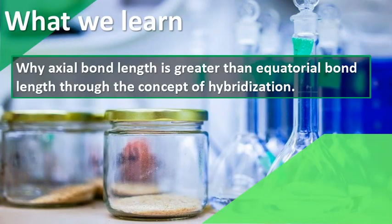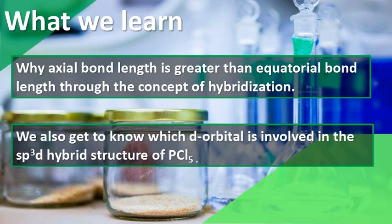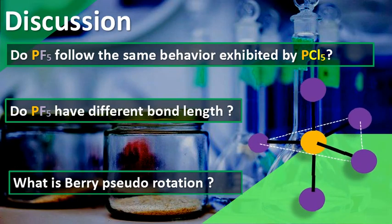In this presentation, we learned why the length of the axial bond is greater than the equatorial bond in PCl-5 with respect to hybridization. We also learned which d-orbital is involved in PCl-5, that is DZ². Before leaving, let us consider a question: does PF-5 exhibit the same property as shown by PCl-5 with a difference in bond length?